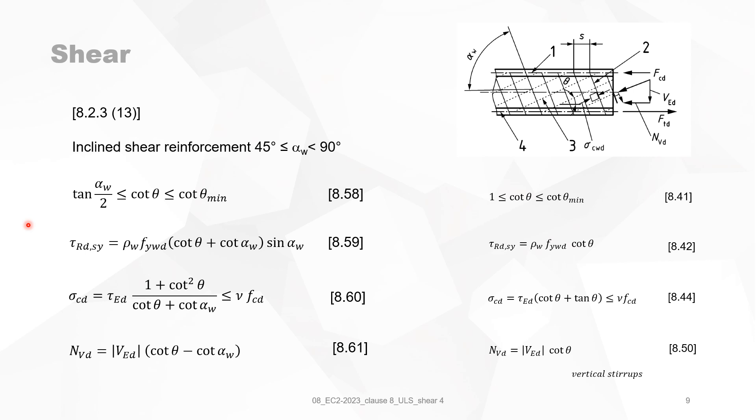In 8.2.3 clause 13, then they will deal with inclined shear reinforcement. Of course, the inclination of the shear reinforcement is defined by the angle alpha W. And it must be between 45 and 90 degrees because of the definition as it is stated here. The formulas are adapted to take into account the inclination of the shear reinforcement. And on the right hand side, you will see the formulas when the inclination, when alpha W equals 90 degrees. So when you have vertical shear reinforcement, then you will see the influence of alpha W on the different formulas.